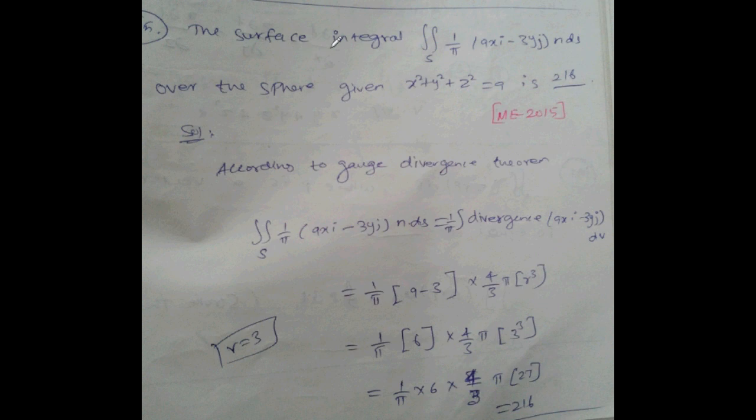The surface integral 1 divided by 9 times xi minus 3yj, n ds, over the sphere given x square plus y square plus z square equal to 9, mechanical 2015.